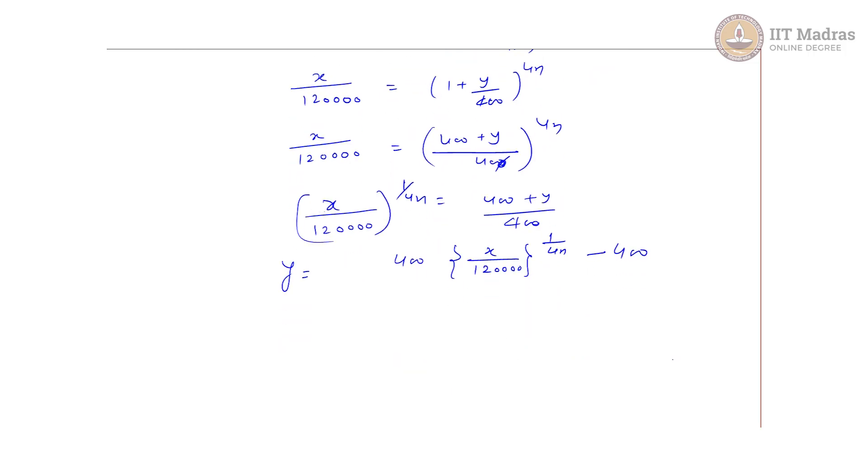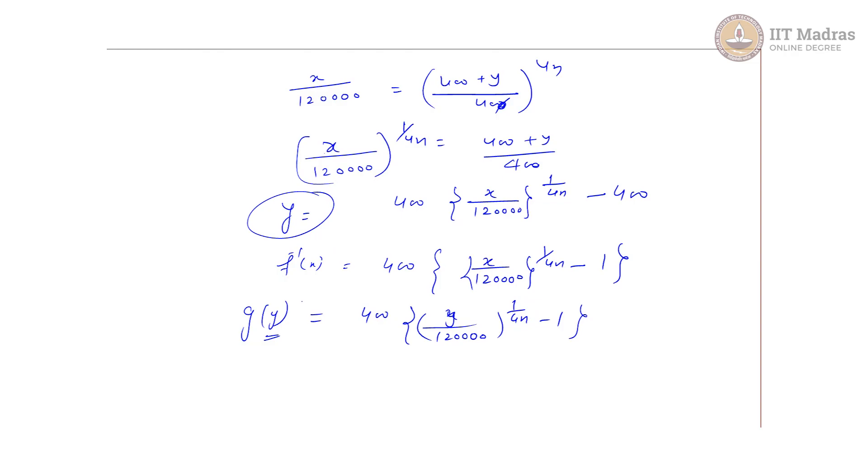So this is the inverse function and I can write it as f inverse, which is 400 times ((x/12 lakh)^(1/4n) - 1). The question asks for g(y), so we replace x with y. So g(y) = 400 times ((y/12 lakh)^(1/4n) - 1). Don't get confused with the different y variables - here y is a random variable and we're just replacing notation. This is the answer for the second question.